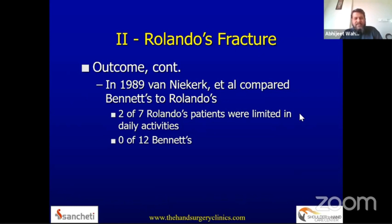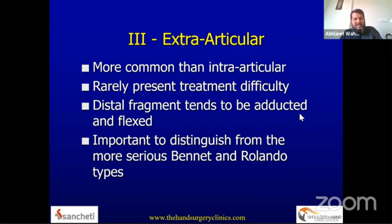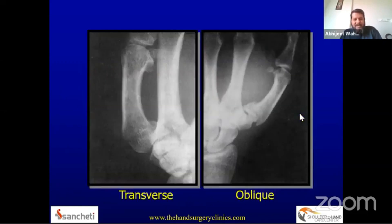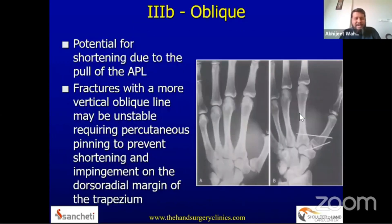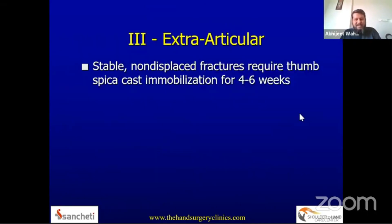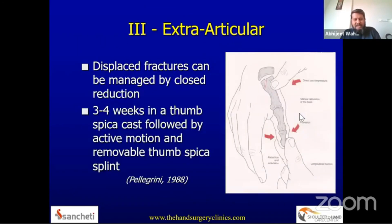The third subtype is extra-articular fractures, where fragments may be adducted and flexed. It is very important to distinguish these from Bennett's and Rolando types. They are usually transverse or oblique fractures, and treatment is straightforward — most patients do well even without very accurate reduction. These fractures can be treated with K-wire fixation, screw fixation, or even a thumb spica cast. The key concern is potential shortening, which may compromise thumb function. Stable non-displaced fractures can be treated with a thumb spica cast; unstable fractures require fixation with K-wires, screws, or plates.